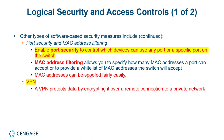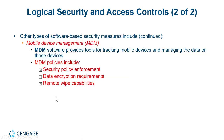MAC address filtering and port security: MAC addresses can be spoofed fairly easily, so this is not the end-all be-all. VPNs — virtual private networks — encrypt data over a remote connection or the public internet so that data cannot be spied on.